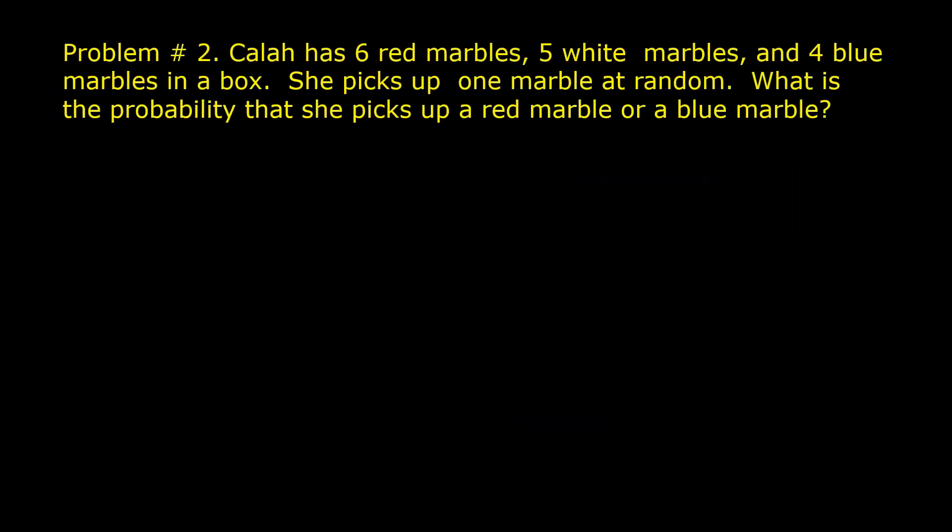Problem number 2. Kayla has 6 red marbles, 5 white marbles, and 4 blue marbles in a box. She picks up one marble at random. What is the probability that she picks up a red marble or a blue marble? The first event is picking up a red marble and the second event is picking up a blue marble. These two events cannot happen at the same time. It is not possible for Kayla to pick up one marble that is red and blue at the same time. So, these two events are mutually exclusive events.